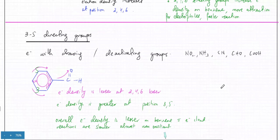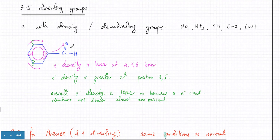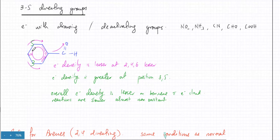Then you have 3,5 directing groups, which are electron withdrawing groups — also given in the data booklet: NO2, NH3, CN, CHO, COOH. These pull electron density away from benzene. The electron density, which increased at positions 2 and 6, is now going to be lesser at positions 2 and 6. Because the overall effect is the electron density being drawn away, the electron density is also going to be lesser at position number 4.